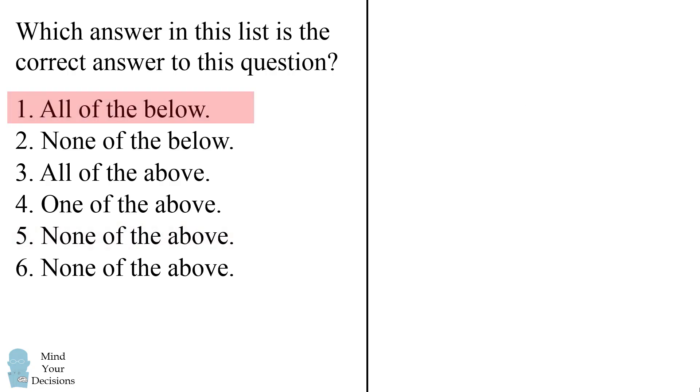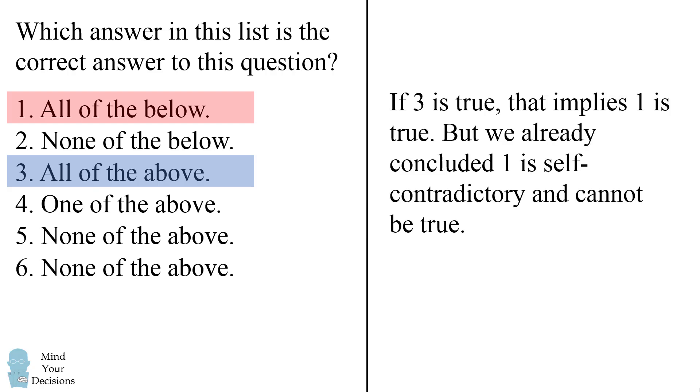Now let's skip statement 2 for a second and consider 3, all of the above. If 3 is true, that implies 1 is true, but we already concluded 1 is self-contradictory and cannot be true. This means 3 also cannot be true.